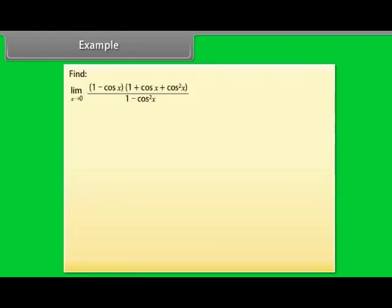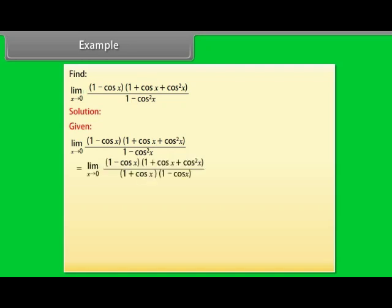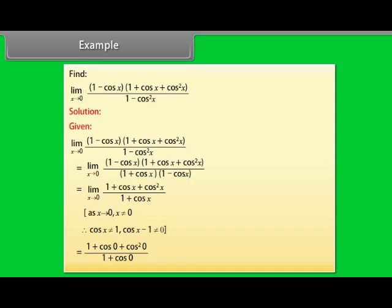Find lim(x→0) [(1−cos x)(1+cos x+cos²x)] / (1−cos²x). Rewrite: (1−cos x)(1+cos x+cos²x) / (1+cos x). As x→0, x≠0, so cos x ≠ 1 and cos x − 1 ≠ 0. Substituting x=0: (1+cos 0+cos²0) / (1+cos 0) = (1+1+1)/(1+1) = 3/2.